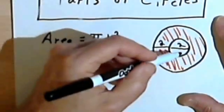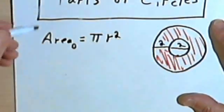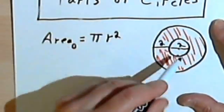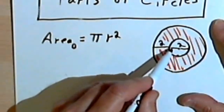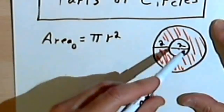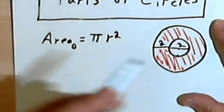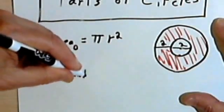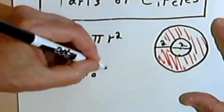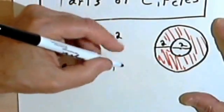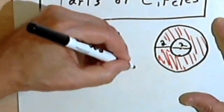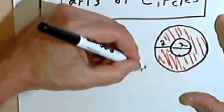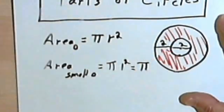So let's start with the small circle. The small circle has a diameter of 2, which means that its radius is 1. Remember that the radius is the distance from the center of a circle to the edge, and the diameter is the distance all the way through. So if we divide the diameter in half, we'll get the radius. For the small circle, the area equals pi times the radius squared. The radius squared is 1 squared, which is just pi times 1, so this white area is just going to be pi.